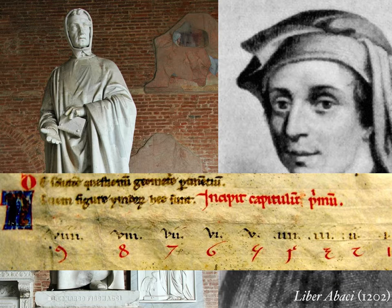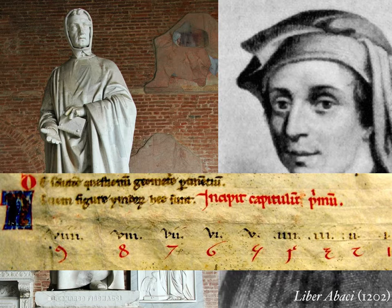The Hindu-Arabic numeral system is a place value system. For example, this work was written in the year 1202. There you can see the leading 1 — that integer 1 is in the first position, but its value is not 1 but 1000, because it's written in the fourth position.